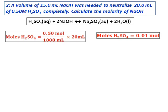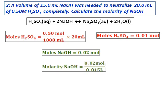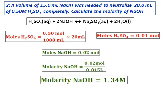From the equation, for every 1 mole of sulfuric acid, I need twice the moles of sodium hydroxide. So the moles of sodium hydroxide will be twice the moles of sulfuric acid, which equals 0.02 moles. From the moles of sodium hydroxide, I can calculate the molarity of sodium hydroxide, and that comes to 1.34 molar.